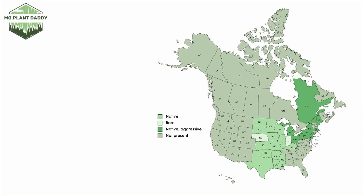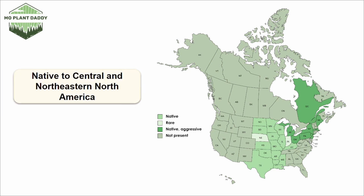If we take a look at a distribution map of gay feather in North America, we can see that it's native to mostly the central United States, but also some of the northeastern United States and a little bit of Canada. In the Northeast, gay feather can be a bit aggressive. If you're wanting to add this species to your landscape, it grows best in hardiness zones 3 through 9.